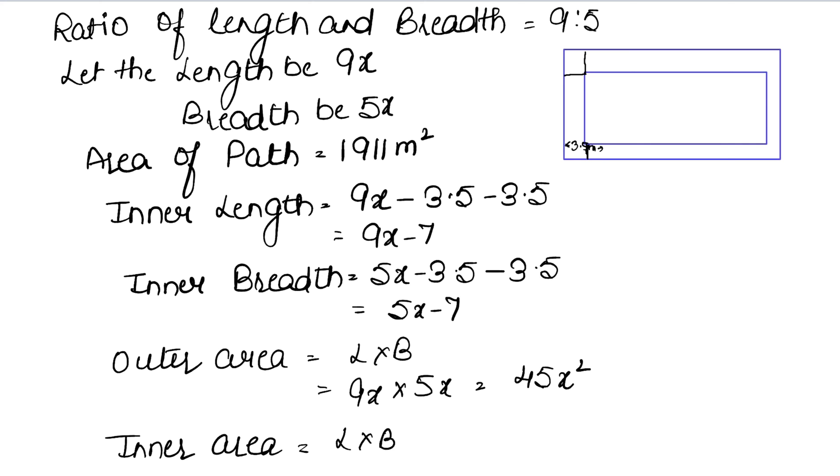Inner area is also length times breadth. The inner length is 9x minus 7 and inner breadth is 5x minus 7. Multiplying these: 9x times (5x - 7) minus 7 times (5x - 7). This gives 45x² - 63x - 35x + 49, which simplifies to 45x² - 98x + 49.